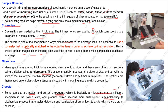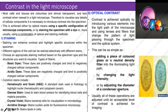Most cells and tissues are colorless, almost transparent, and lack contrast when viewed in a light microscope. To visualize cellular components, it is necessary to introduce contrast into the specimen. This is achieved either by optical means using specific microscope component configurations, by staining with a dye, or more usually a combination of both. Staining enhances contrast and highlights specific features within the specimen.